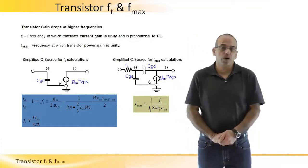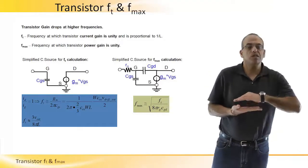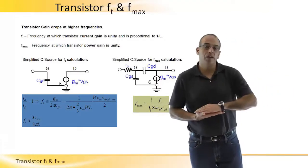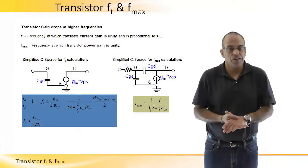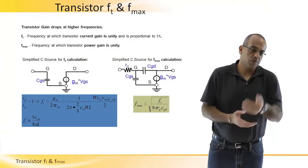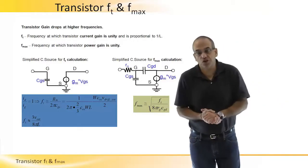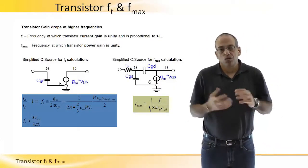When frequency increases, the impedance of the CGS drops, and the voltage on the CGS is coming down. Hence the output current goes down because it's dependent on the VGS and the current gain drops.